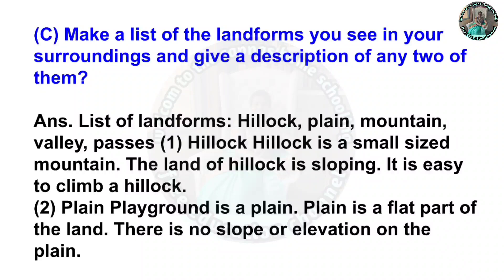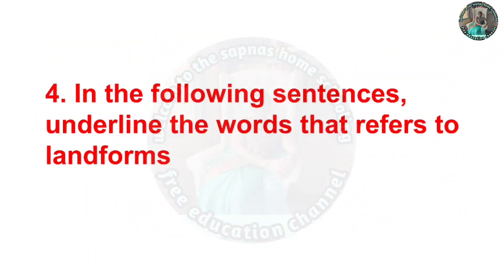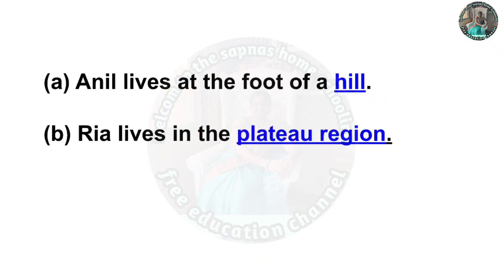C: Make a list of the landforms you see in your surroundings and give a description of any two of them. Answer: List of landforms — hillock, plain, mountain, valley, passes. A hillock is a small-sized mountain; the land of a hillock is sloping and it is easy to climb. Second, a plain — a plain is a flat part of the land; there is no slope or elevation on the plain.